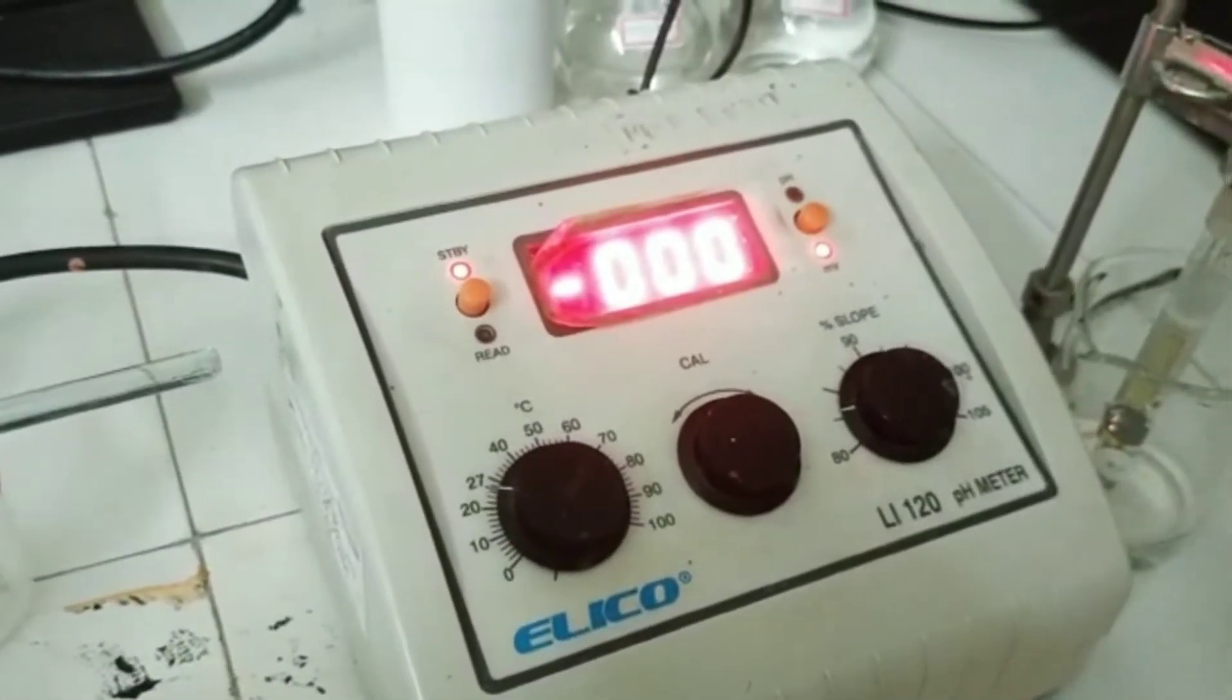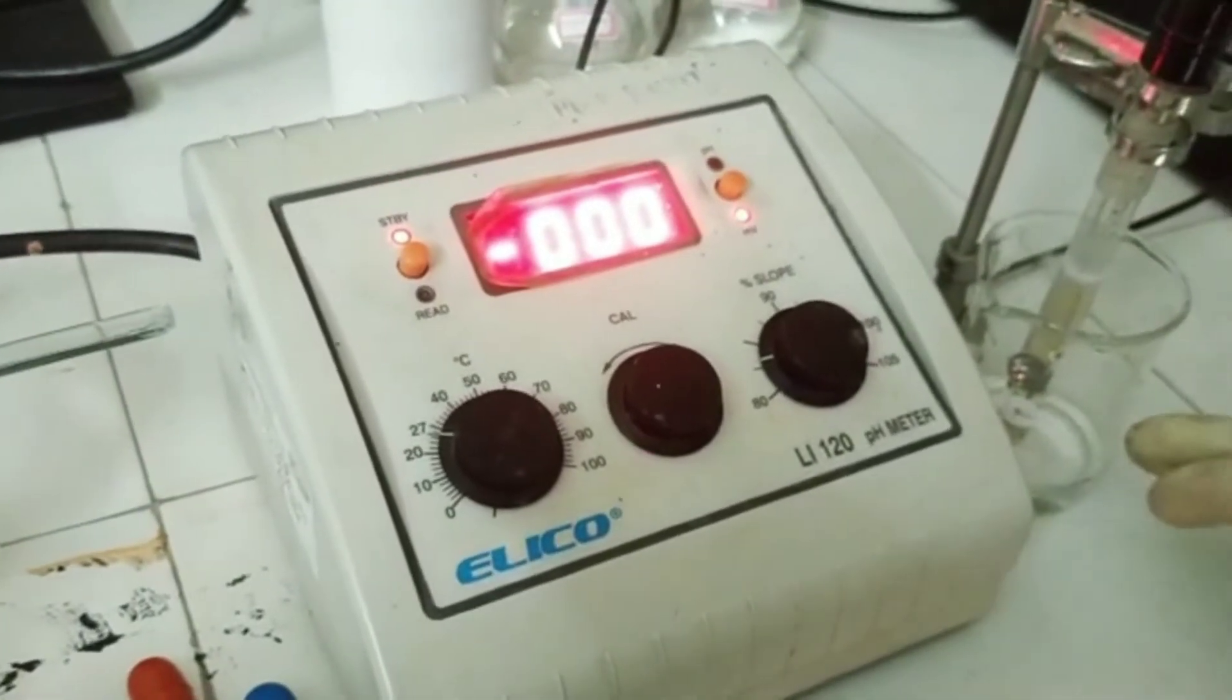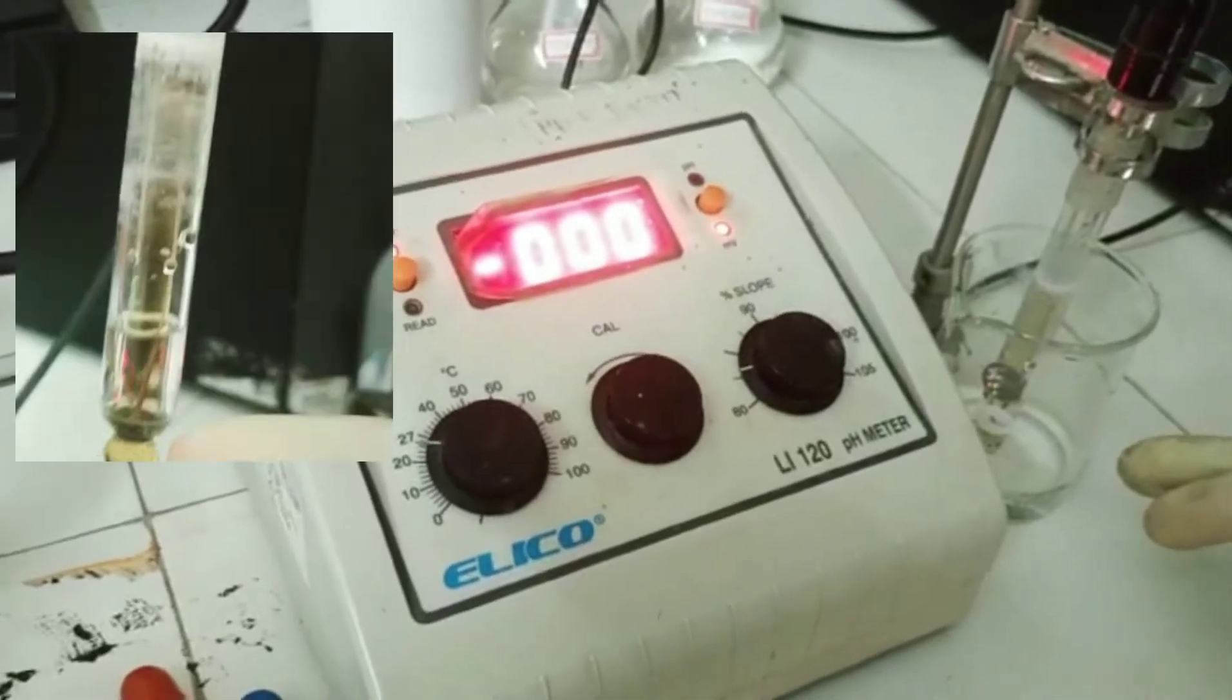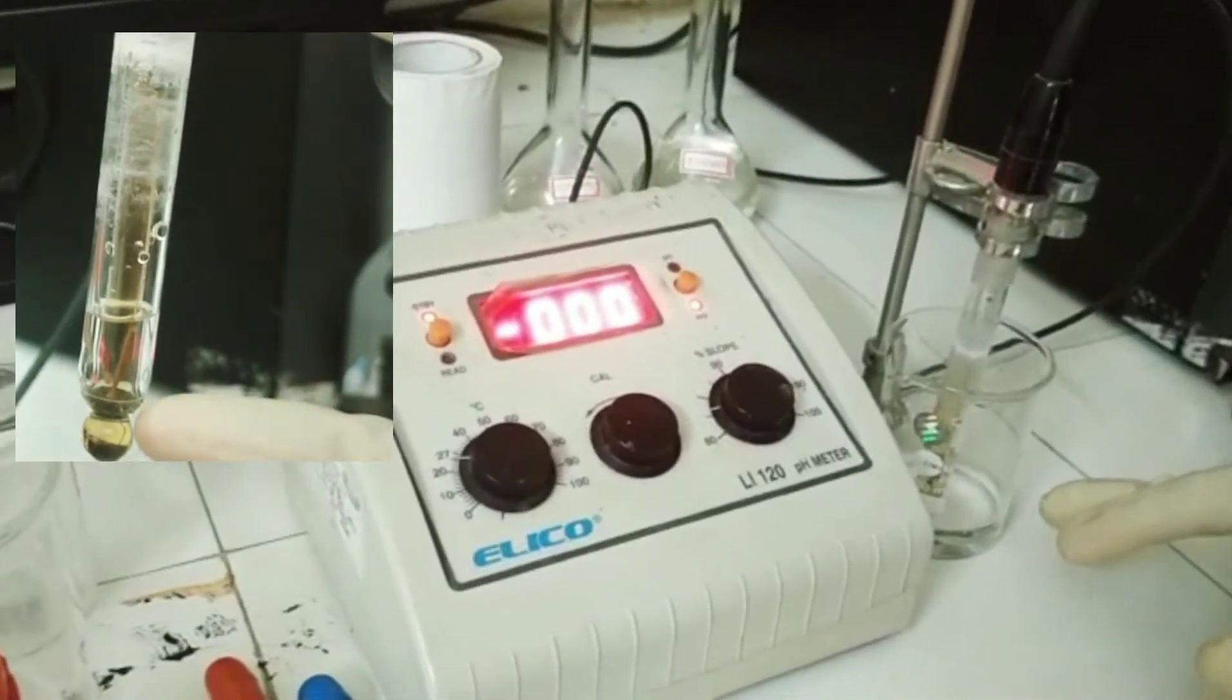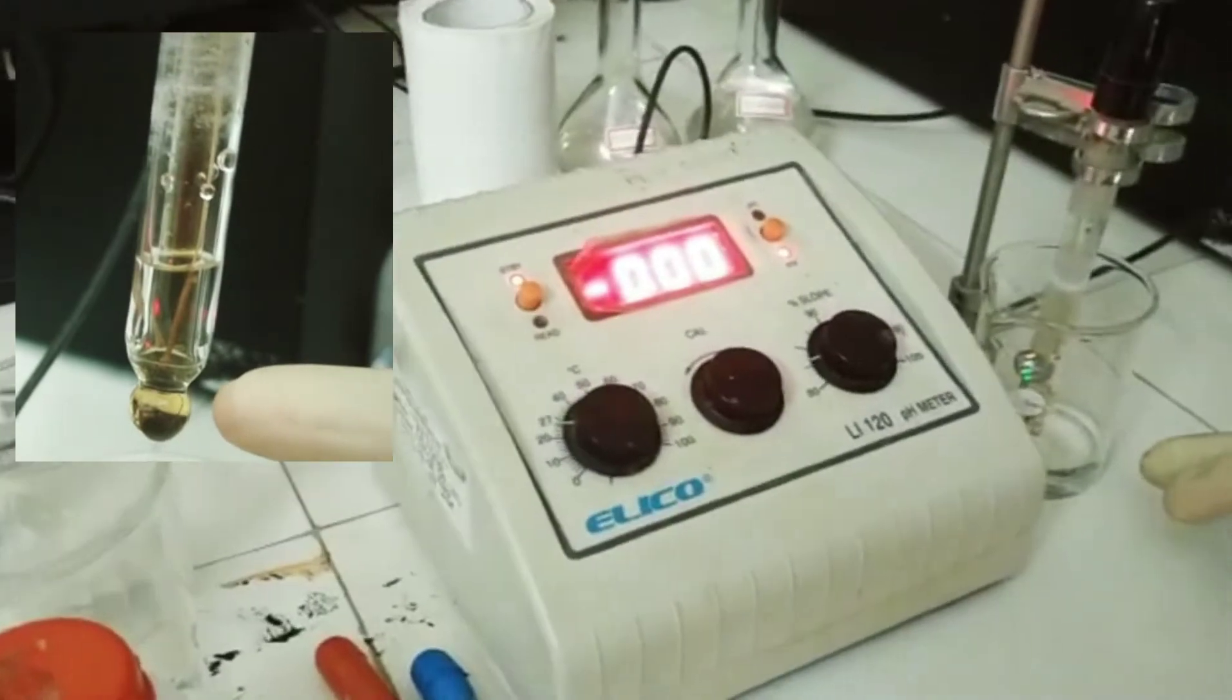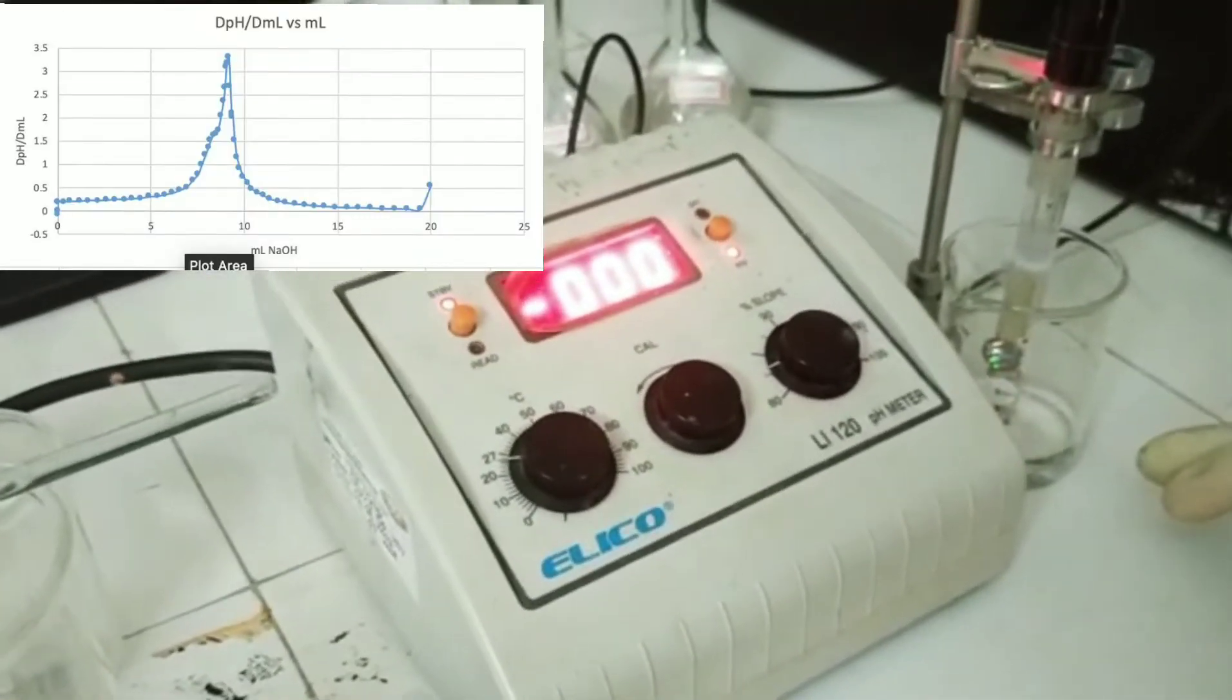Potentiometric titration is based on the fact that the potential across the two electrodes, that is the indicator electrode and the reference electrode, will be changing sharply at the end point. And this end point can be determined by constructing a graph taking potential on y-axis and volume of the titrant on x-axis.